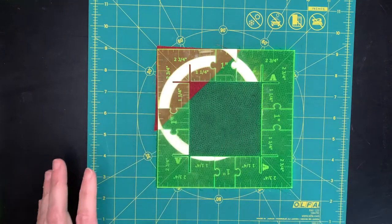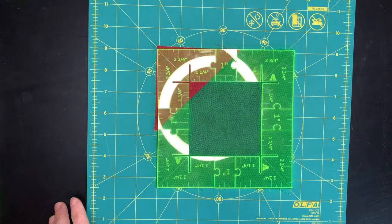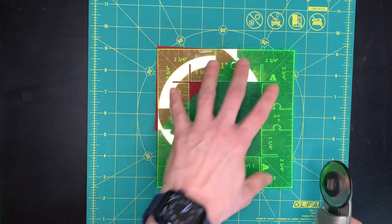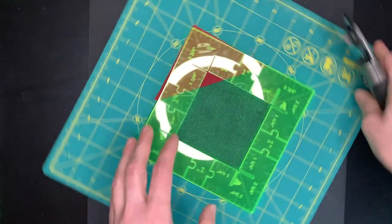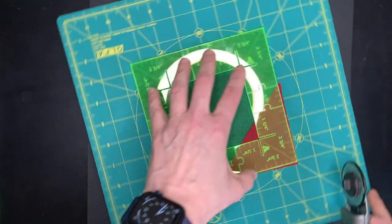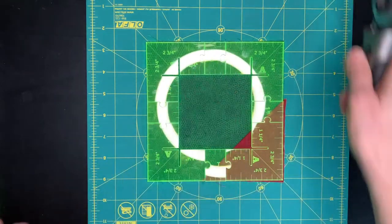And then this is a time that you definitely want to use your rotating mat to trim the edges. This one would be a much bigger trim, and just rotate, trim, rotate, trim.